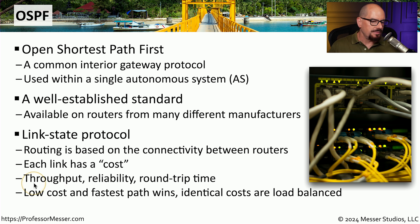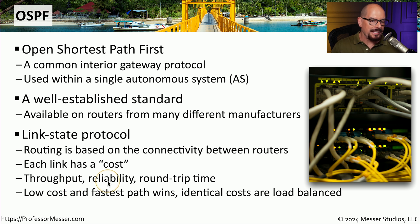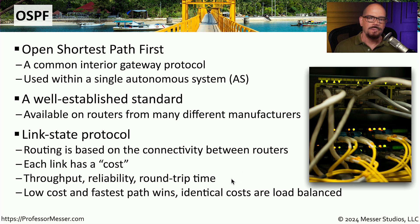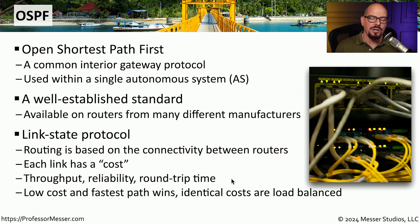This cost is often associated with how much throughput may be available on a particular link, whether that link is up or down, and how long it takes to traverse that connection. With OSPF, the lowest cost and the fastest path is going to be the best route to a remote location. And if there are identical costs on OSPF, many implementations will allow you to load balance across both of those links.